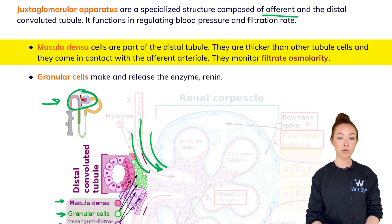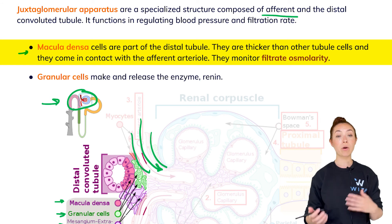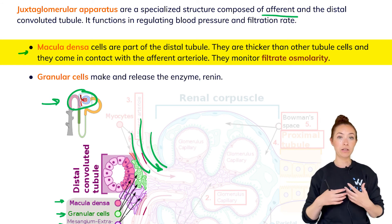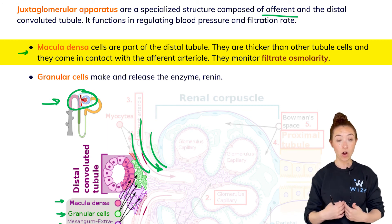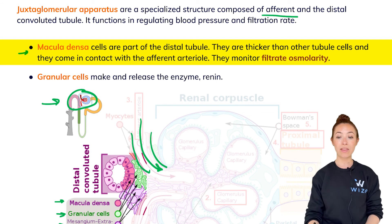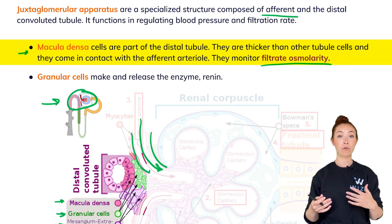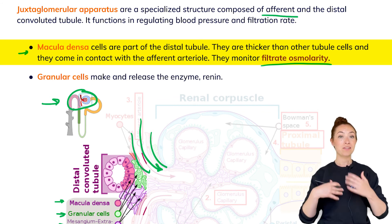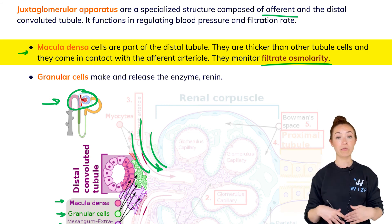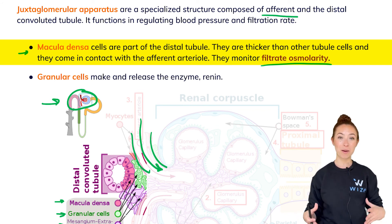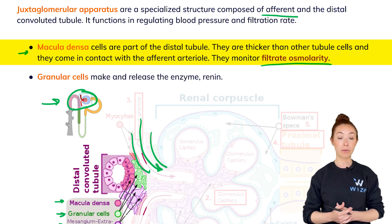The macula densa cells are part of the distal tubule and are slightly different from other tubule cells. They are the ones that come in contact with the afferent arteriole and monitor filtrate osmolarity. If osmolarity is not appropriate, they trigger responses to restore homeostasis. I won't go into full detail here as it's not super high yield for the MCAT, but it's included for completeness.